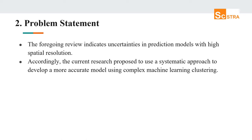The problem statement is that the foregoing review indicates uncertainties in prediction models with high spatial resolution. The case calls for continuous improvement of existing models to improve their accuracy. Accordingly, the current research proposes to use a systematic approach to develop a more accurate model using complex machine learning clustering.